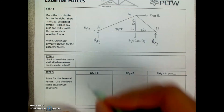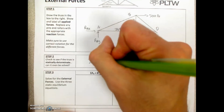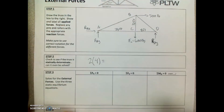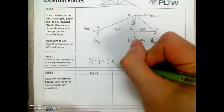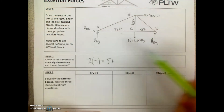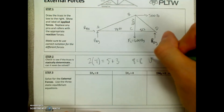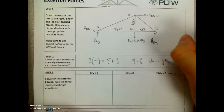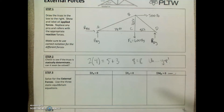Checking static determinacy: 2 × 4 joints = 8, members = 5, reaction forces = 3, so 5 + 3 = 8. Because 8 = 8, we can solve this truss.